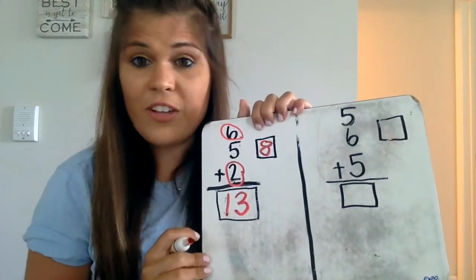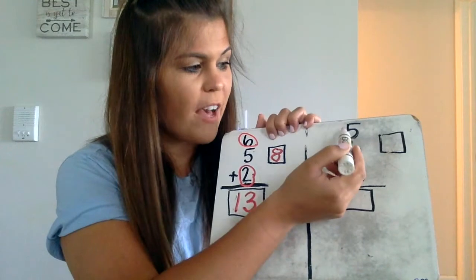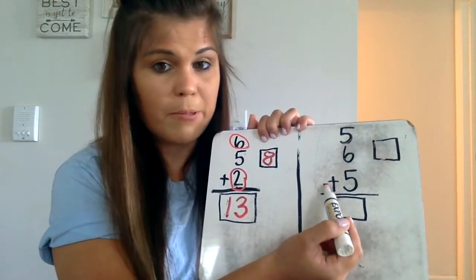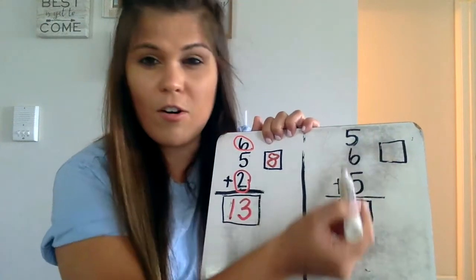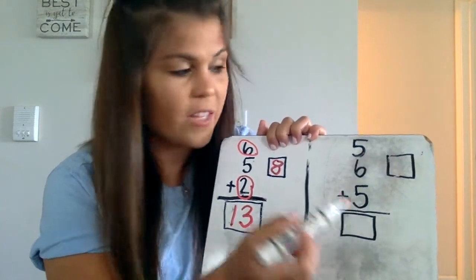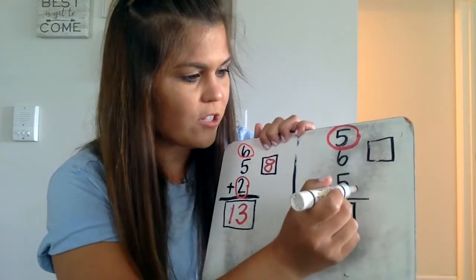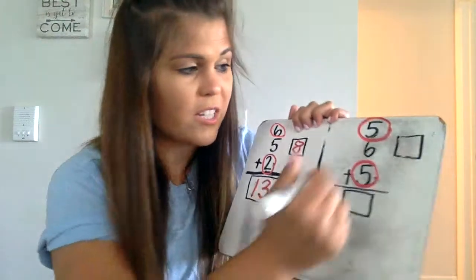Alright, so now let's do another example. Here, I see five plus six plus five. There's only one plus sign, but if I see my plus sign down here, I know I'm adding all three numbers together. I think I'm going to add five plus five first, because I know that five plus five equals ten...